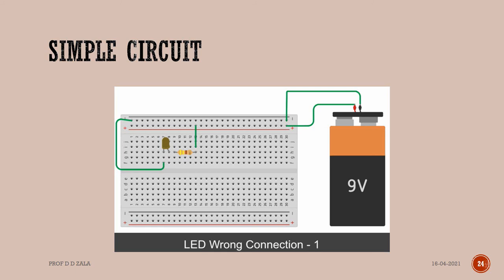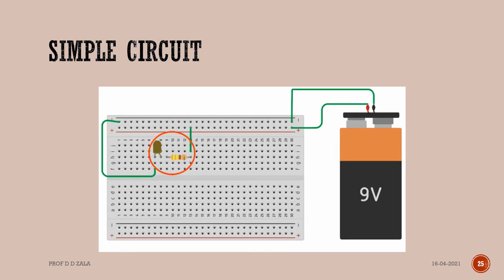Now we will see the common mistakes people make when using the breadboard to make connections. In this connection, the LED doesn't glow because the connections are not proper. The resistor and LED are placed beside each other. The holes in the breadboard, except the power rail, are connected column-wise. So there is no connection between the anode of the LED and the resistor lead.